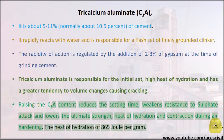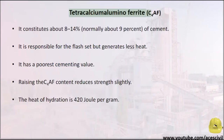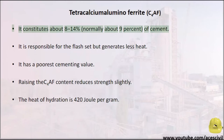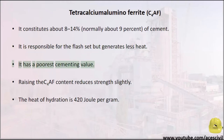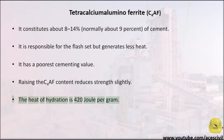C3A also increases heat of hydration and contraction during air hardening. The heat of hydration of C3A is 865 joules per gram. Tetracalcium Aluminate Ferrite (C4AF) constitutes about 8–14%, normally about 9%, of cement. It is responsible for the flash set but generates less heat and has poor cementing value. Raising the C4AF content reduces strength slightly. The heat of hydration of C4AF is 420 joules per gram.